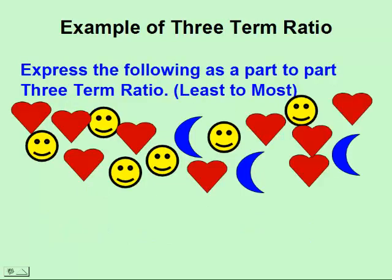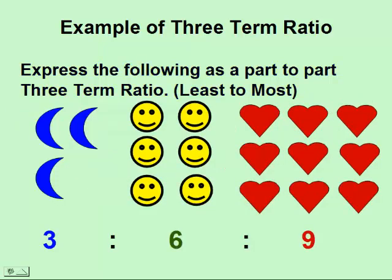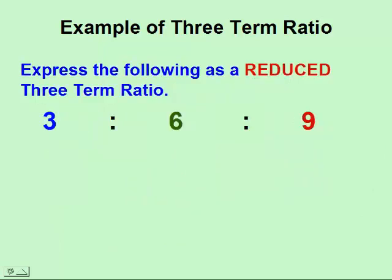Let's do an example of a three-term part-to-part-to-part ratio. Firstly, let's organize all of our information again. We have three moons, six happy faces, and nine hearts. So the ratio would be three to six to nine. We can reduce this ratio by simply dividing each one of these three terms by three. And that would give us a one to two to three ratio.